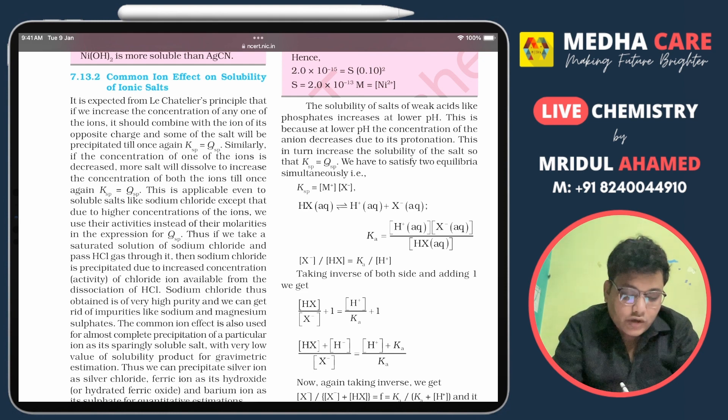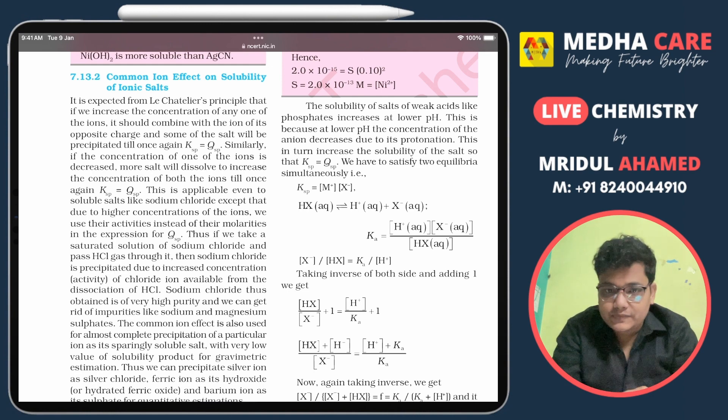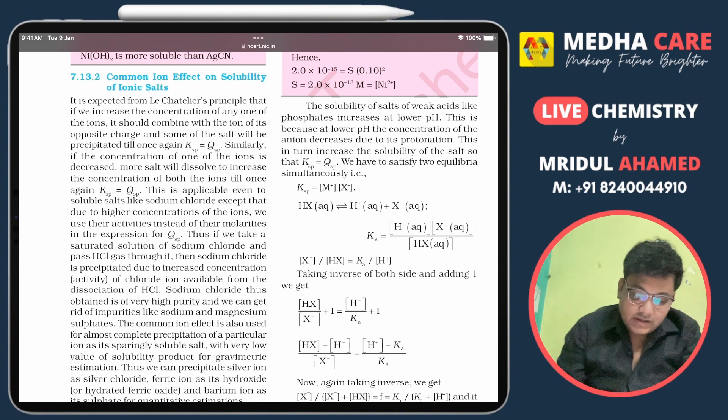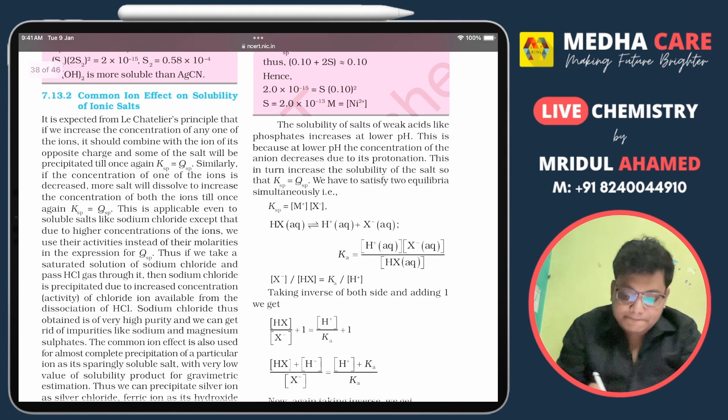one subtopic: common ion effect on solubility of ionic salts. In the second column, you will see the first line: the solubility of salt of weak acid like phosphate increases at lower pH.